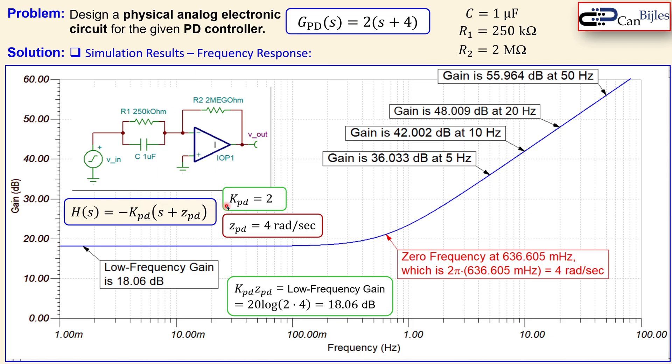So the product of the KPD and the ZPD will give you the low frequency gain. But of course it is a scalar value. We need to convert that to dBs. For that you need to use 20 log of that product. That will give you 18.06 dB. Which is also shown in the plot. So this is sort of the low frequency gain because these are the low frequencies.